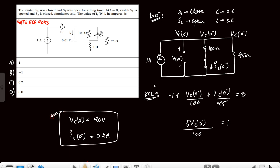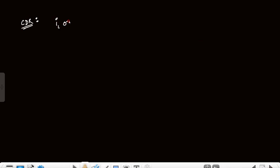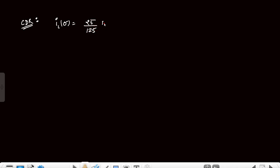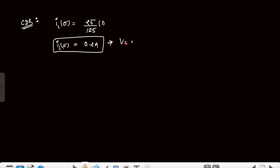We can also calculate il(0⁻) using the current division rule, since the two resistors 100Ω and 25Ω are in parallel. The opposite resistor is 25Ω, so il(0⁻) = 25/(100+25) × 1 = 25/125 = 0.2 ampere. Accordingly, vc(0⁻) = 100 × 0.2 = 20 volt, confirming the initial values.